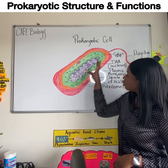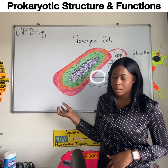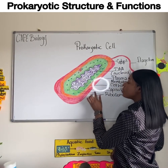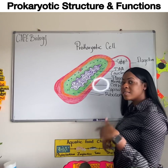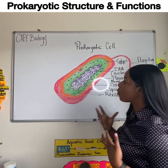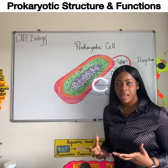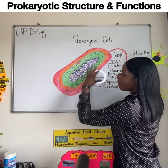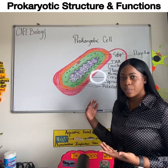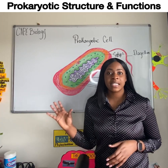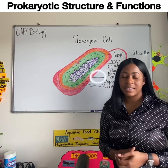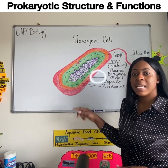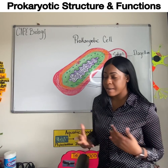This is the structure of a typical prokaryotic cell. The first external structure is called the capsule, and this is a unique structure to most prokaryotic cells, especially bacteria. Think of the capsule as a covering — it provides protection to the prokaryotic cells, protecting it from being ingested and digested by other organisms, and also protecting the cell from being dehydrated in its environment.